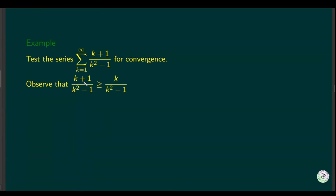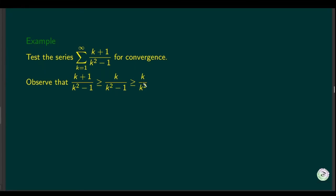To establish the inequality, we drop the plus 1 from the numerator, making the numerator smaller. Then we drop the negative 1 from the denominator, making the denominator larger. Both changes make the expression smaller. So the original term is greater than k/k² after simplification, which equals 1/k.